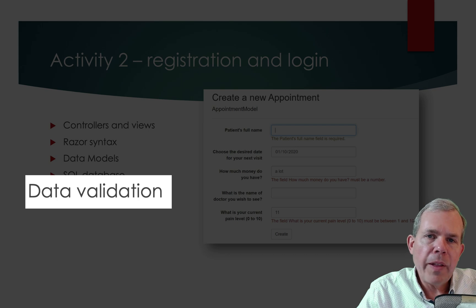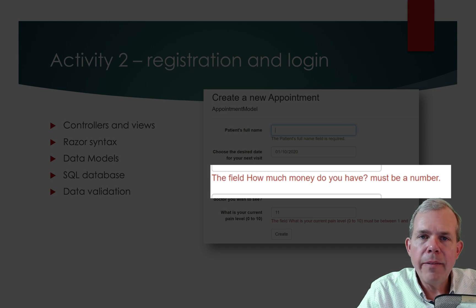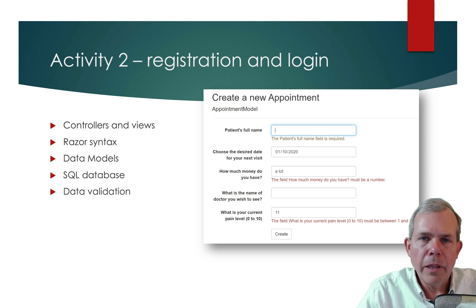We're also going to talk about validation. You can see on this screen we have an appointment-making form. The validation example shows that there are certain rules about what you can put in each entry point — some things allow numbers, some allow text, and sometimes there's a limit to the numbers. That's what we'll see in the activity.